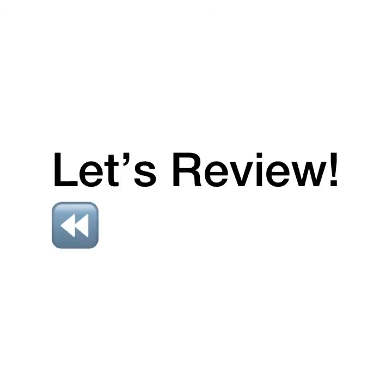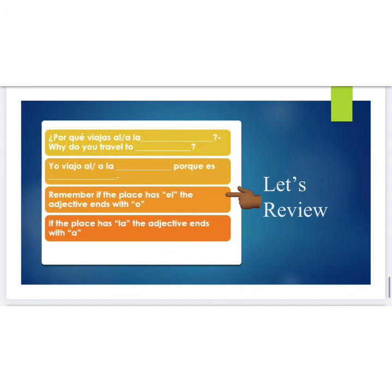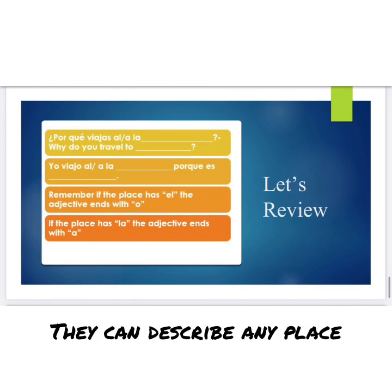Vamos a repasar — let's do it again. To find out why someone travels to a particular place we simply say '¿Por qué viajas al?' or '¿Por qué viajas a la?' followed by the place. To respond we simply say 'Yo viajo al' or 'a la,' followed by the place, 'porque es,' then the adjective. Recuerda: if the place has 'el,' use the adjective with O. If the place has 'la,' use the adjective with A. Y para los adjetivos — for those adjectives which don't end with an A or an O, we leave them and use them just as they are.